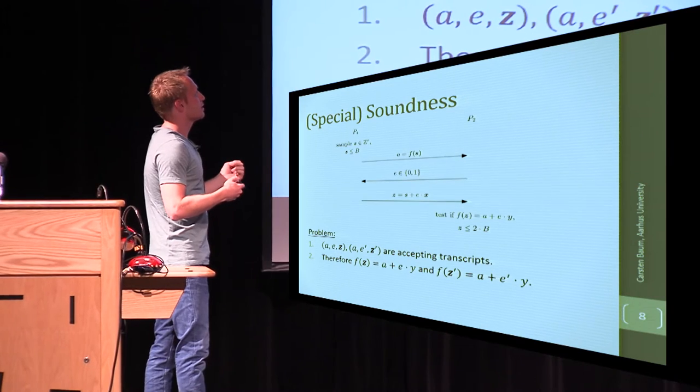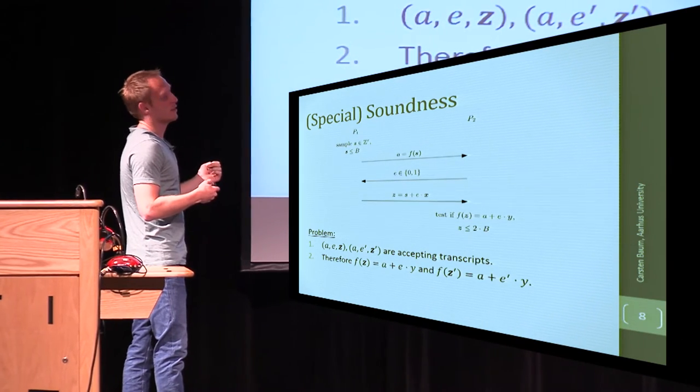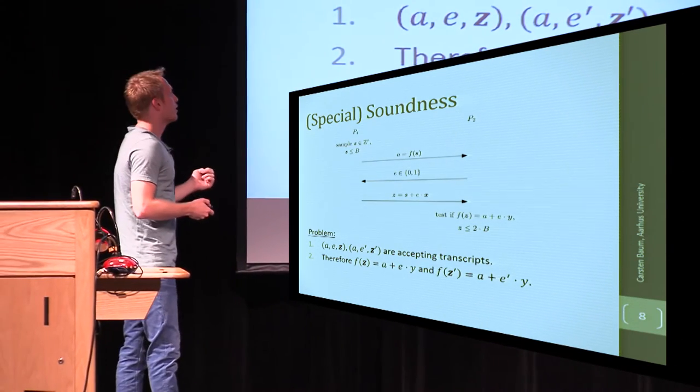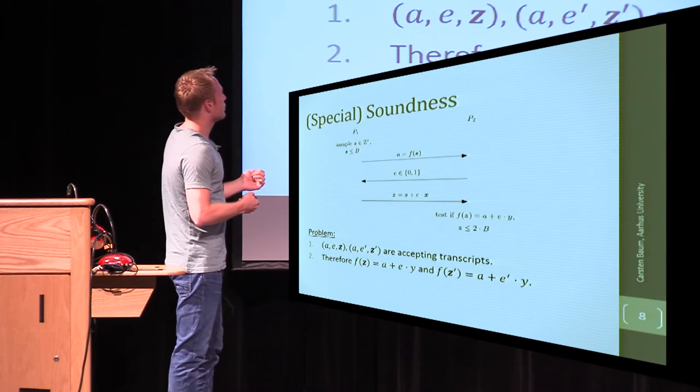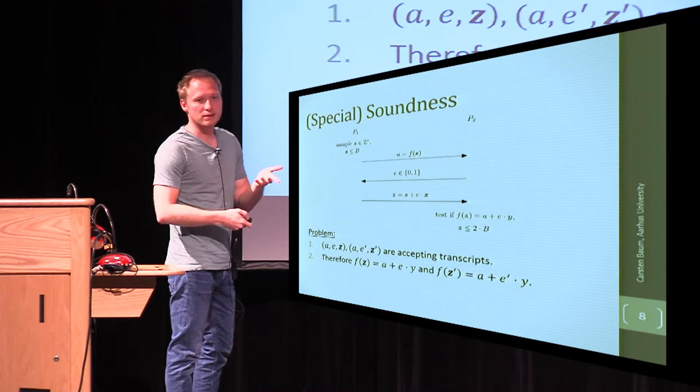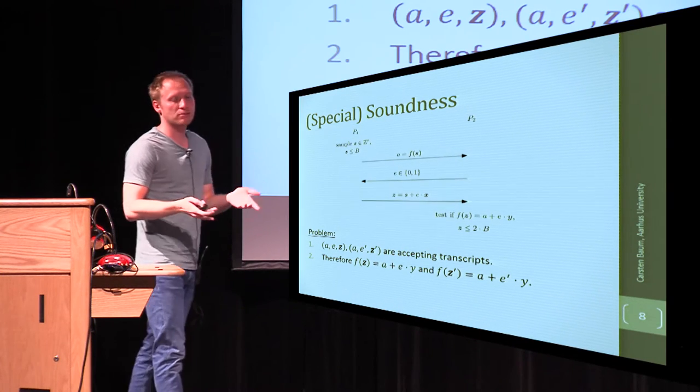First idea would be, let's take this here from a larger interval. Like, what could possibly go wrong? Correctness would still be, the whole thing would still be correct. But if you want to prove that you can extract a witness using a special soundness property...